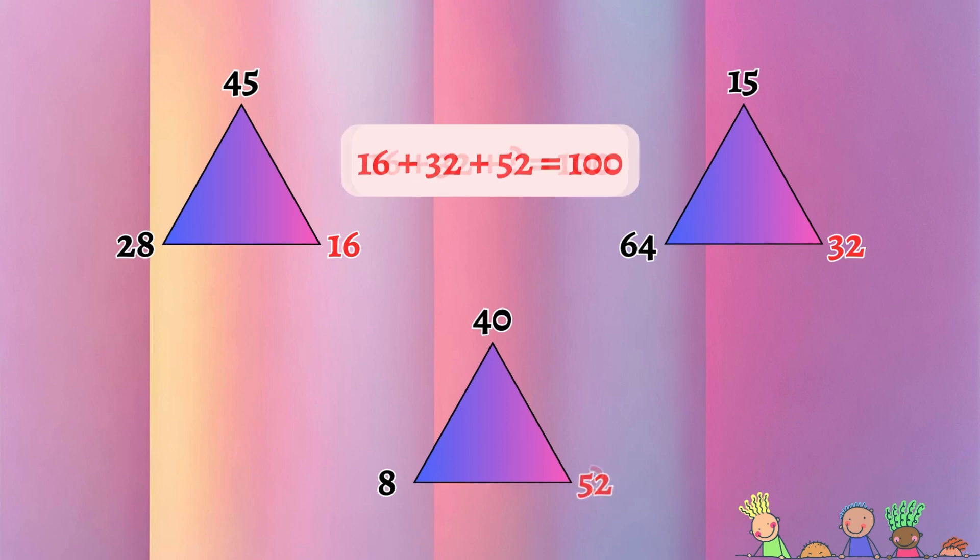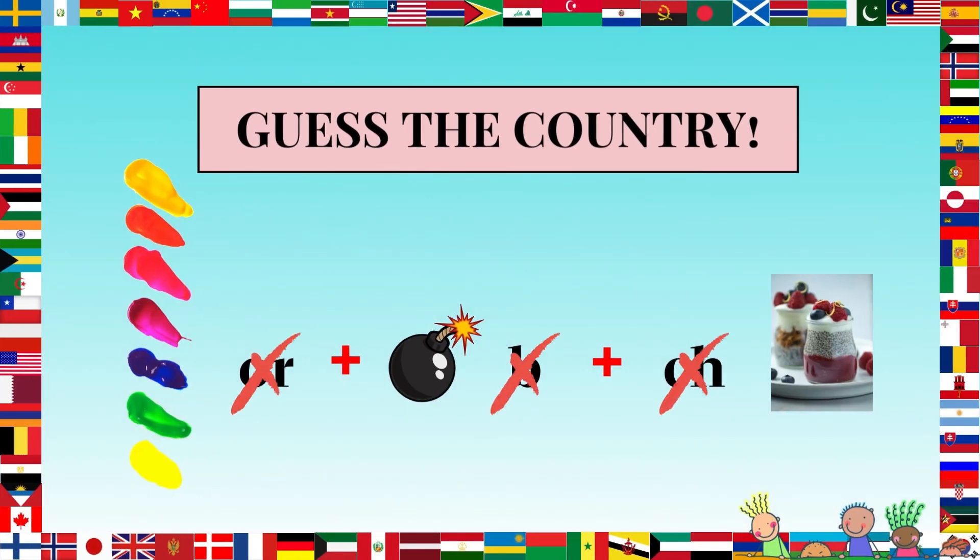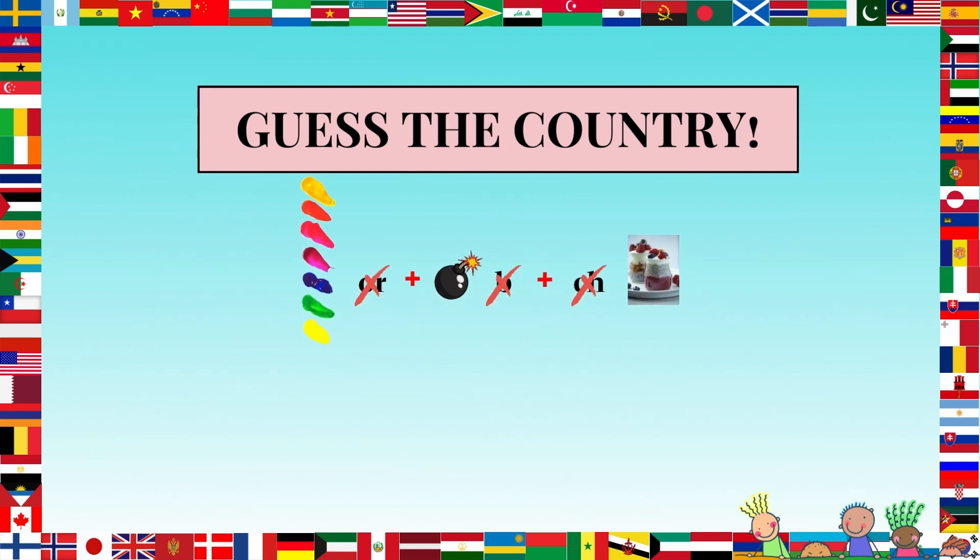It's rebus time. Can you deduce what country this puzzle represents? What did you get? Let's check if you're correct. Looks like the first picture represents a color palette, so color, but we need to take away OR. Now we're left with Call. Next looks like we've got a bomb. Take away the B and we've got Ohm. And the last picture is a picture of chia sea pudding, so the word must be Chia. CH is crossed out, leaving us with IA. Let's put all of that together: Call plus Ohm plus IA. Colombia. Brilliant.